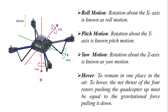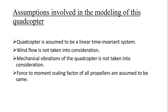Next, the basic terminologies of a helicopter: similar to a rectangular coordinate system, we have x, y, and z axes. The x axis is known as the roll axis, the y axis is known as the pitch axis, and the z axis is known as the yaw axis. Rotation about the x axis is roll motion, rotation about the y axis is pitch motion, and rotation about the z axis is yaw motion. Hovering means to remain in one place in the air; to hover, the thrust produced by the four propellers must equal the gravitational force pulling it down.